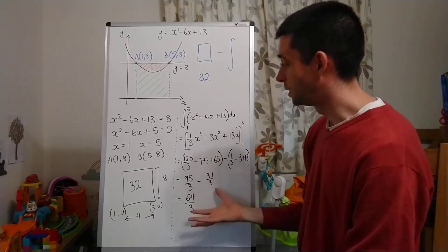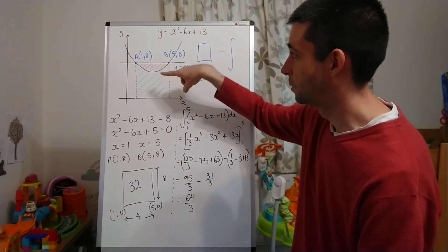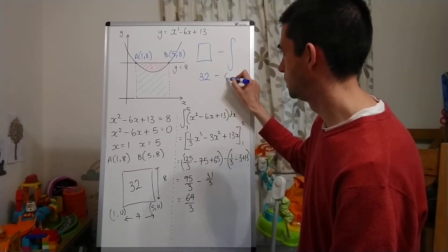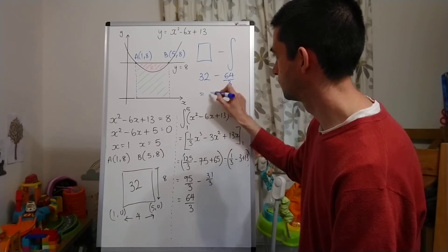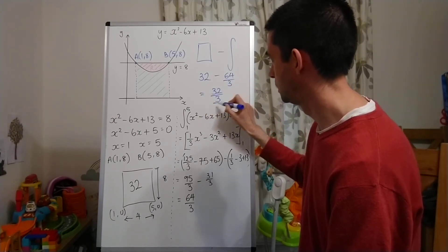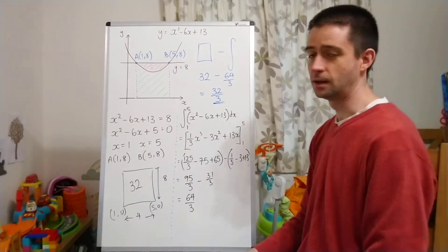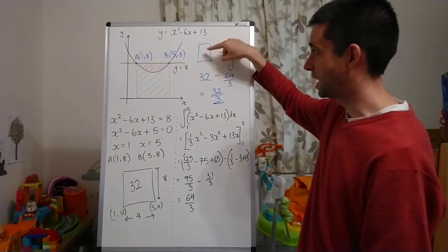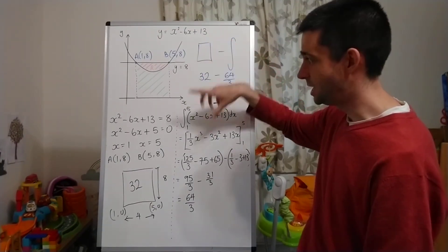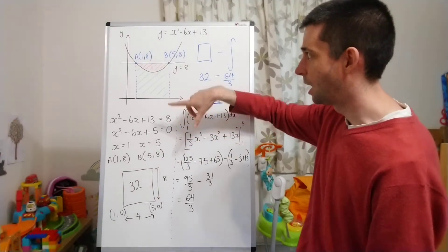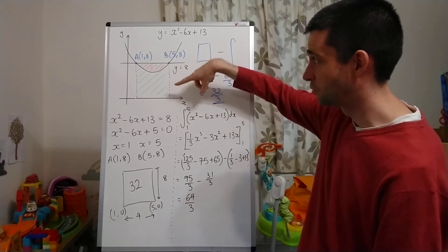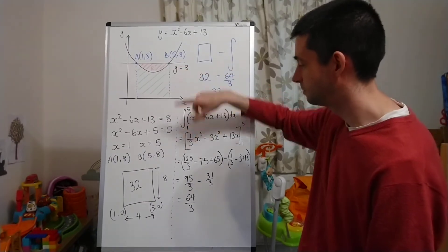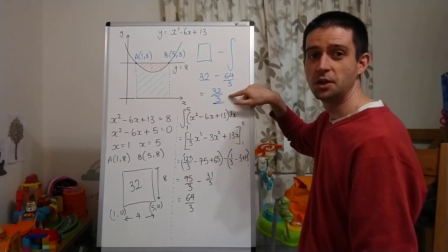So why was I finding that out? I was finding that out because I needed to do rectangle take away the integral to find the overall area. So I'm now going to do 32 take away 64 over 3, which gives me 32 over 3 as my area for R. I established the strategy: rectangle minus integral. I found the points by solving simultaneously. I found the rectangle area, then the green area by integrating between x equals 1 and x equals 5. Final answer for R: 32 over 3. Job done.